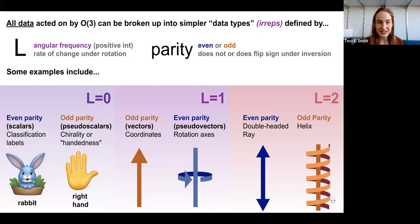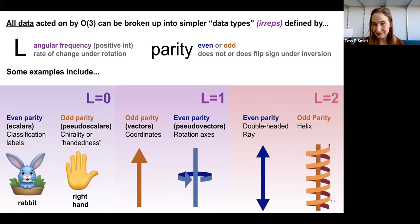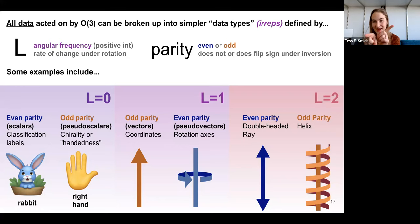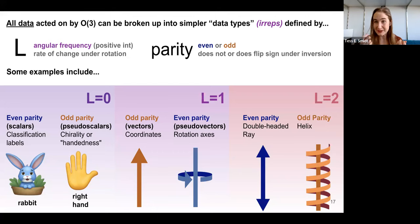L equals one are things that change at the same rate as a rotation of my coordinate system. The even version are familiar 3D vectors — if I rotate my coordinate system, the vector rotates along with it. The odd version are pseudovectors, which you get by taking the cross product of two vectors: X cross Y gives Z, but minus X cross minus Y also gives Z. If you invert your coordinate system, a pseudovector doesn't change sign. These describe things like cross products and rotation axes.